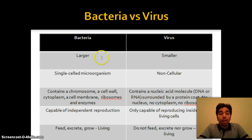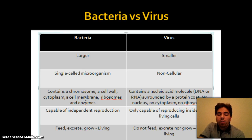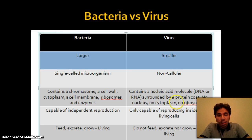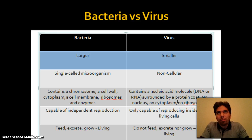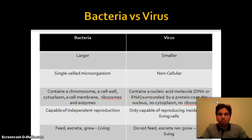To summarize the differences: bacteria are larger, viruses are much smaller. Bacteria are single-celled microorganisms; viruses are less than a cell. Bacteria contain a chromosome, cell wall, cytoplasm, and cell membrane — all functions of life. A virus has DNA surrounded by a protein coat, sometimes a cell membrane, but no cytoplasm, no nucleus, no ribosomes — only a few enzymes that help it attack the cell.